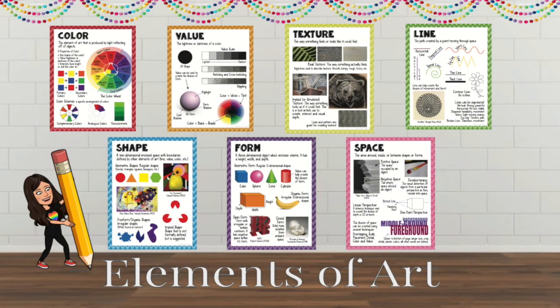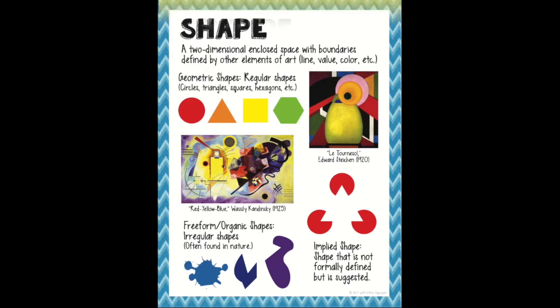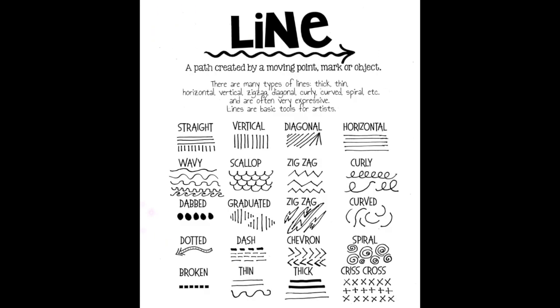The elements of art that we will focus on are line, shape, and texture — specifically implied or simulated texture. That's the way something looks as if it could feel. So in order to give our koala some fur, we're going to use a series of lines and patterns using zigzag lines to imply our koala has fur and therefore texture.